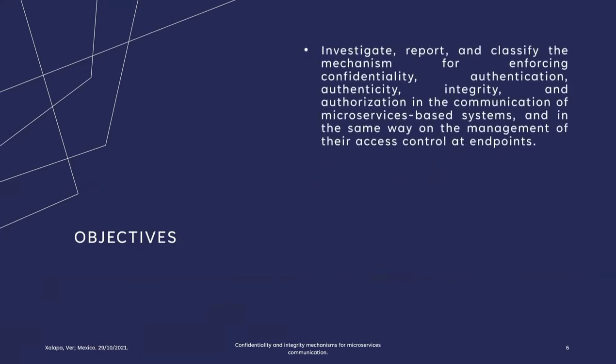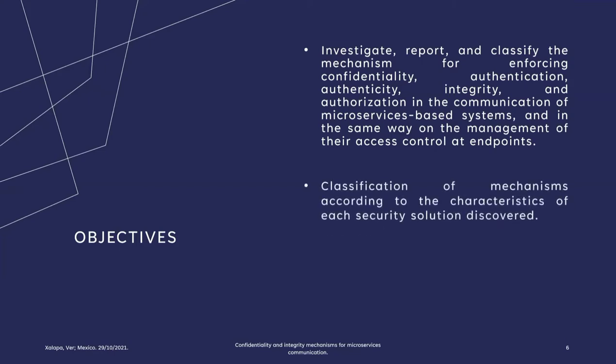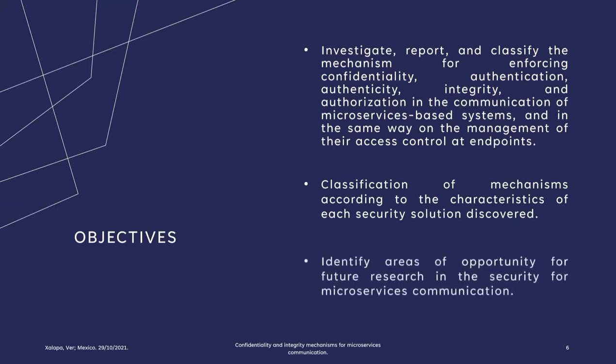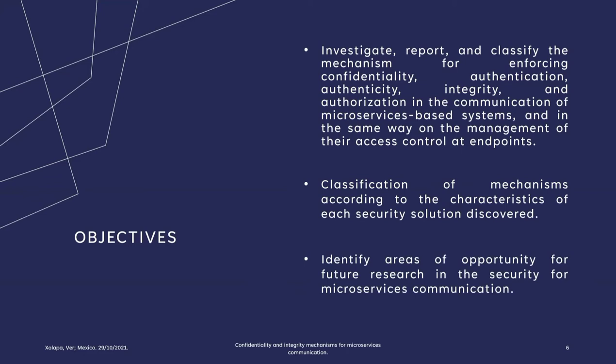The objectives of the work can be briefly noted as: investigate, report, and classify mechanisms to enforce confidentiality, authentication, authenticity, integrity, and authorization in the communication of microservice-based systems, and the management of their access control at endpoints. In the same way, the classification of mechanisms according to the characteristics of each security solution discovered, and identifying areas of opportunity for future research in the security for microservice communication.